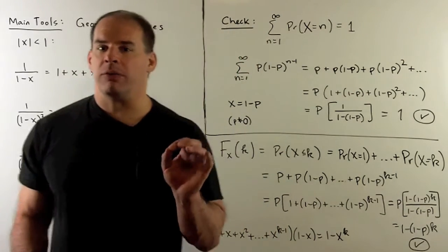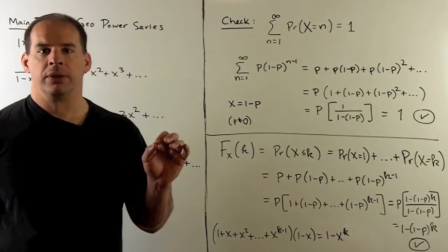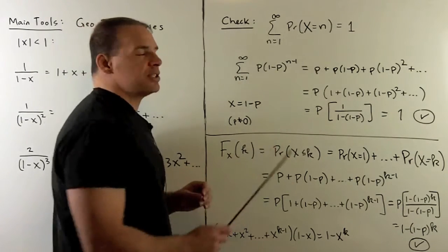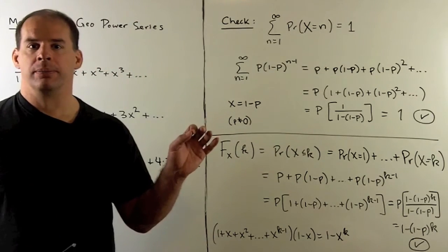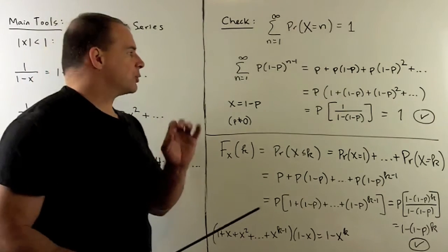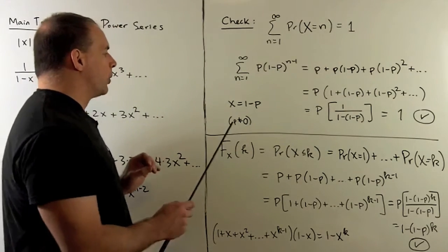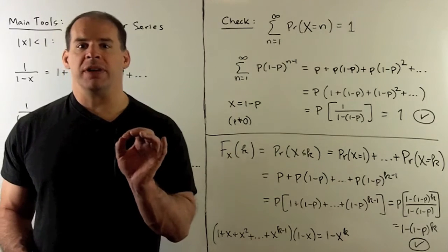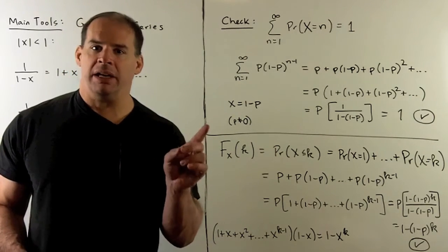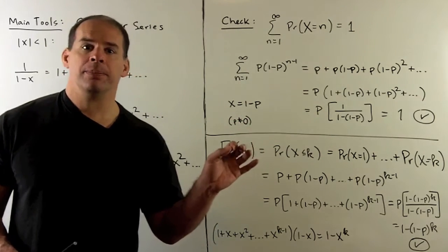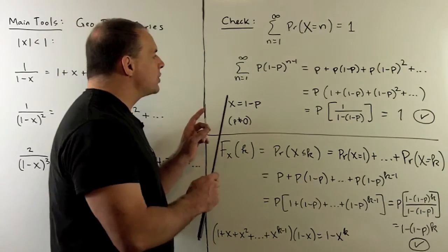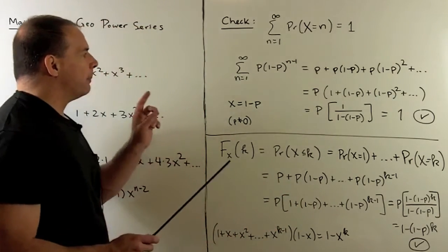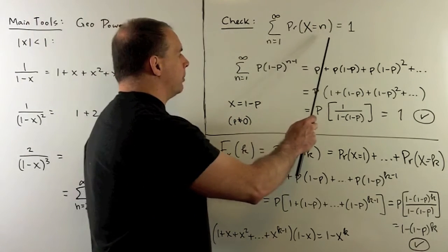First, we should verify that we have a probability distribution. We want to show that if we take the sum over all of our probabilities, it adds up to 1. We should split off the case where P equals 0 — that's when there's no chance of getting a heads, so the mean and variance will be undefined. Otherwise, if we sum over these probabilities and write out the first few terms, we can factor out a P.